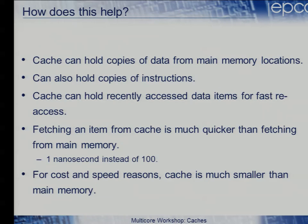You also cache instructions, but you very rarely have to worry about the instruction cache. I only once ran out of instruction cache — I was writing assembly language and generated 68 kilobytes of code, while the instruction cache on the i860 was only 64 kilobytes, and performance dropped through the floor. Fetching data from cache is much quicker than from main memory — effectively about one cycle. The cache is much smaller than main memory because it costs more and takes up more physical space on chip.